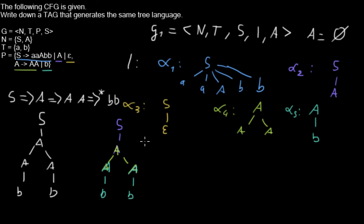And as you can see now here, this tree is exactly the same one as this tree. And therefore, we now have a tree-adjoining grammar that generates the tree language as the derivations of the context-free grammar are doing.